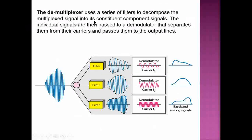The demultiplexer uses a series of filters to decompose the composite signal into its component signals. The demultiplexer does the opposite of what the multiplexer does — it filters the combined link into individual frequencies, which are interpreted by the demodulator according to the frequency modulation used, and then the signal is given out as it came in.